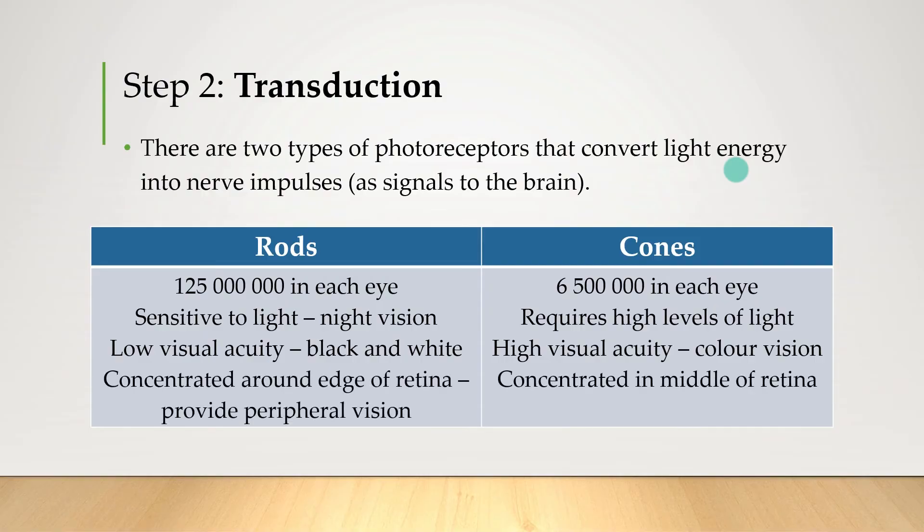Rods are concentrated around the edge of the retina, and so they're really important for providing our peripheral vision, whereas cones are what we predominantly rely on for that really focused high-detail vision.